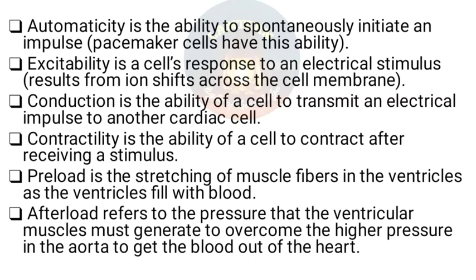Purkinje fibers have a firing rate of 20–40 beats per minute. Automaticity is the ability to spontaneously initiate an impulse; pacemaker cells have this ability. Excitability is a cell's response to an electrical stimulus, resulting from ion shifts across the cell membrane. Conduction is the ability of a cell to transmit an electrical impulse to another cardiac cell. Contractility is the ability of a cell to contract after receiving a stimulus. Preload is the stretching of muscle fibers in the ventricles as they fill with blood. Afterload refers to the pressure the ventricular muscles must generate to overcome aortic pressure to eject blood.